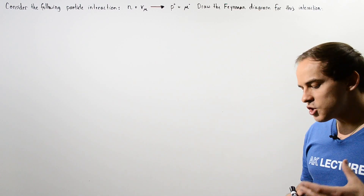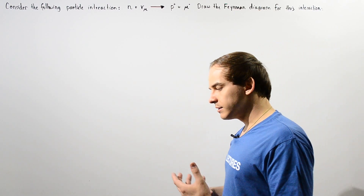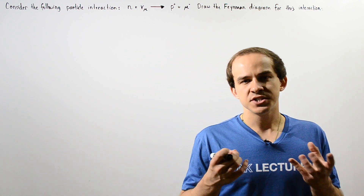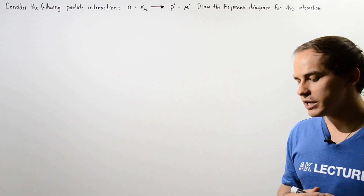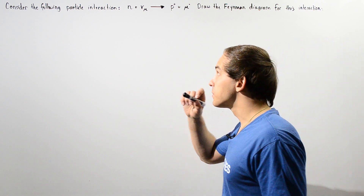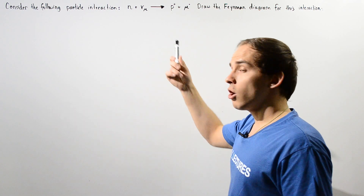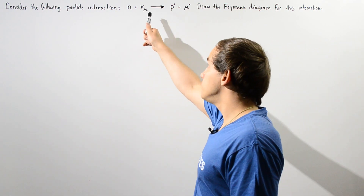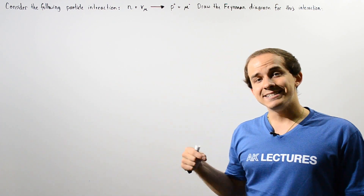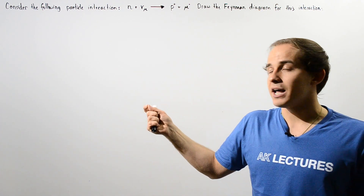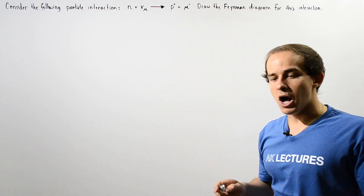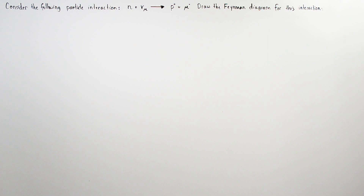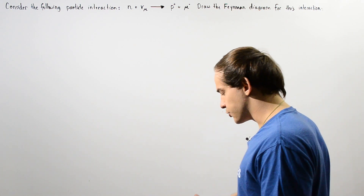In this example, we're going to take a look at a particular type of particle interaction and graphically represent this interaction using the Feynman diagram. We'll consider the interaction in which a neutron interacts with a muon neutrino and decays into a proton, also producing a muon. We want to draw the Feynman diagram for this particular particle interaction.